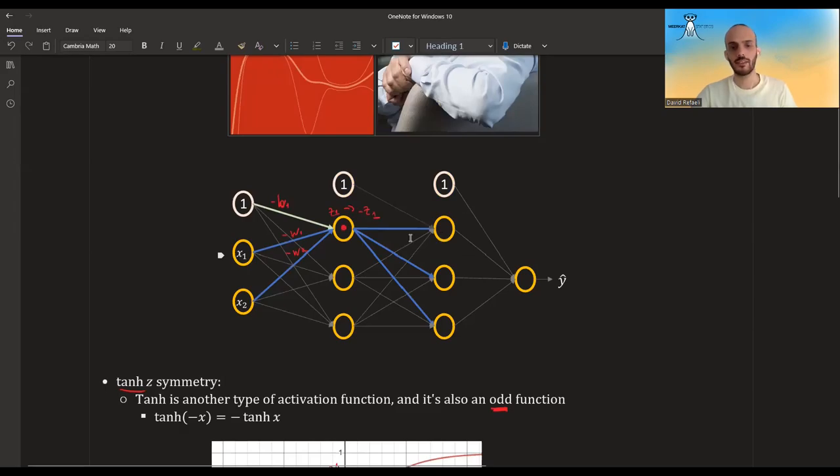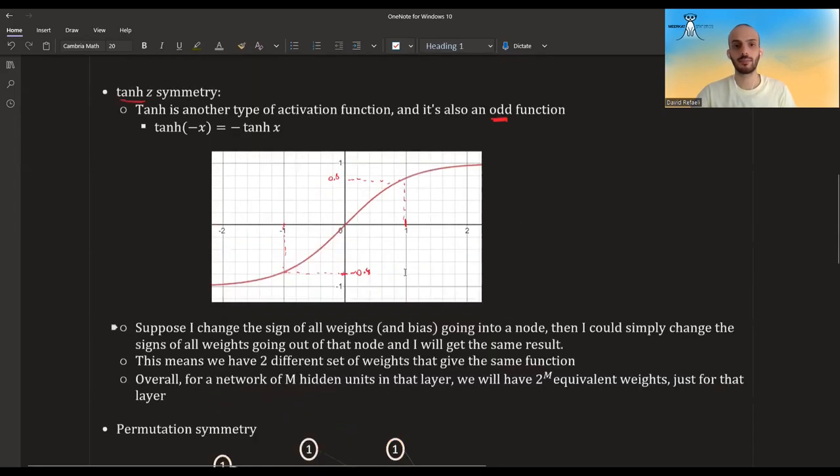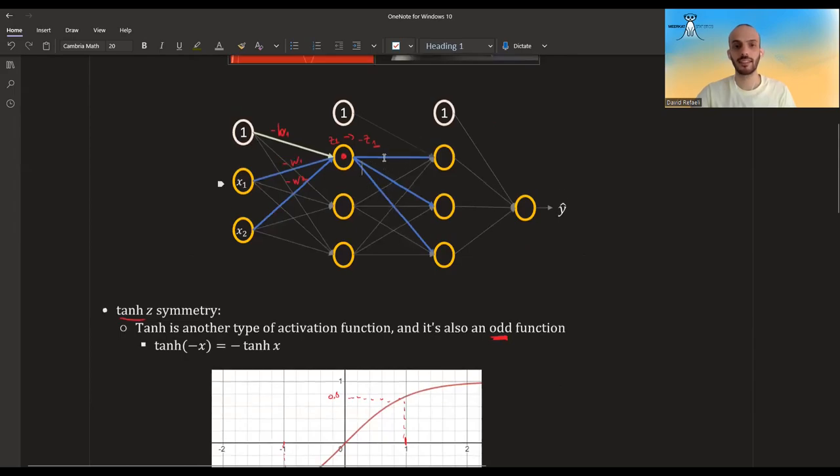What can I do if I have the tanh function? Well, what I could do is simply change the weights of everything that goes out of this node. So if before I had w3, w4, and w5, let's just add a minus to them, and we will get that nothing changed.